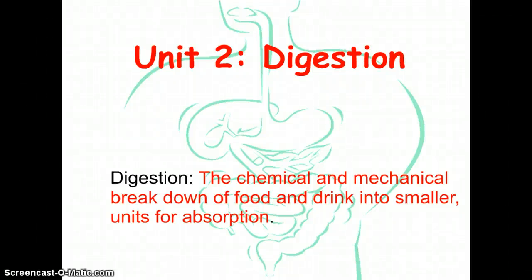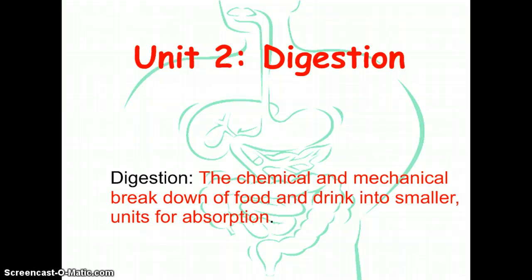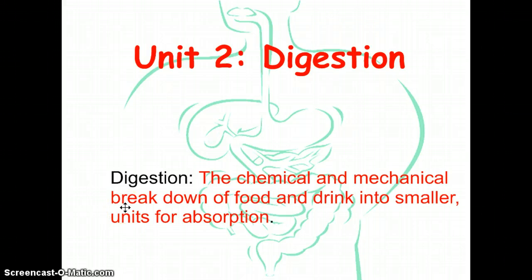Now that you can understand how we go from a single cell all the way to an organ system, we can focus exclusively on our first system, which is the digestive system. This is unit two, the digestive system. It's important that we know what digestion is. Digestion is when we chemically and mechanically break down our food and drink into smaller units so that our body can absorb it and create energy from it.